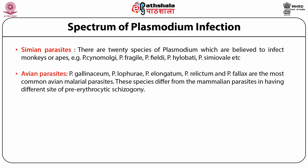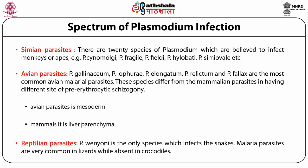Avian parasites: Plasmodium gallinaceum and Plasmodium relictum are the most common avian malarial parasites. These species differ from mammalian parasites in having a different site of pre-erythrocytic schizogony. In avian parasites, the site is the mesoderm, while in mammals it is the liver parenchyma. Reptilian parasites: the only reptilian species is Plasmodium wenyoni, which infects snakes. Malarial parasites are very common in lizards but absent in crocodiles.